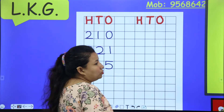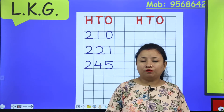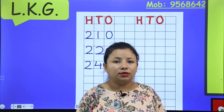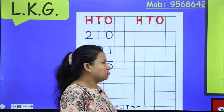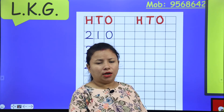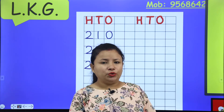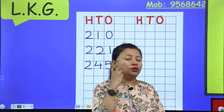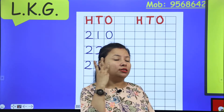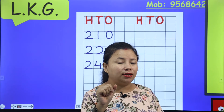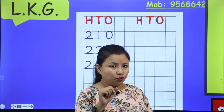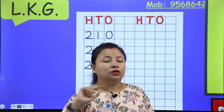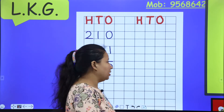Now number four is two hundred thirty-nine. Two hundred thirty means three in the tens place. So two hundred thirty-nine: two, three, and nine — 239.